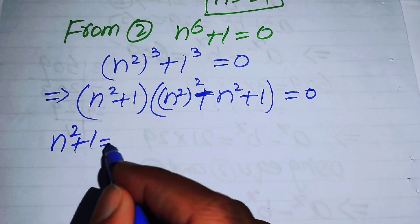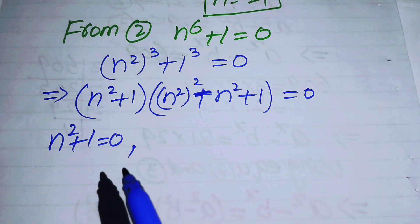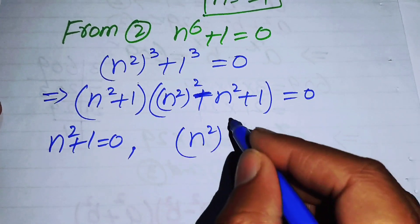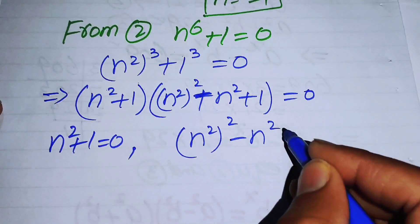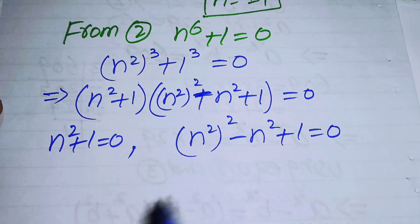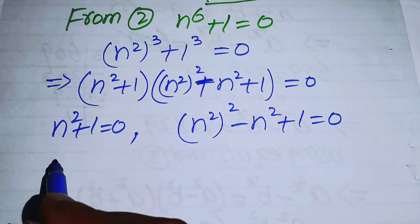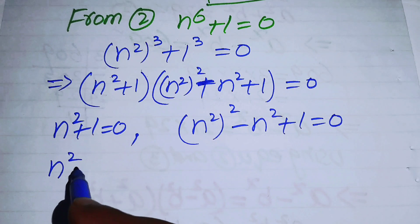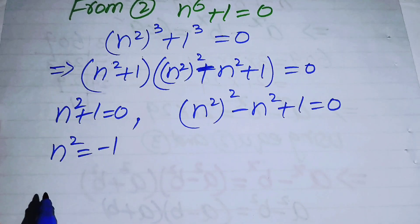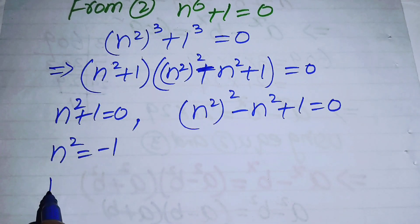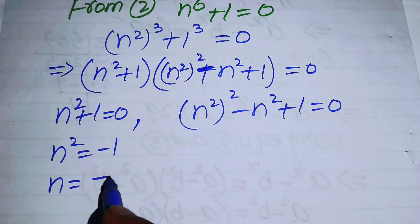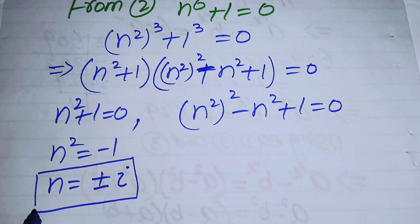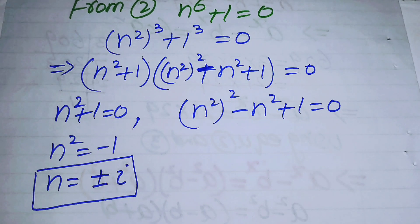From the first case, n^2 + 1 = 0, we get n^2 = -1. Taking the square root of both sides gives n = ±i (plus or minus iota). These are two more complex roots of the given equation.